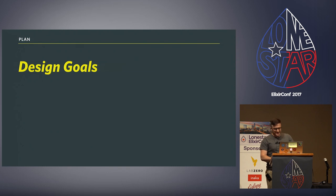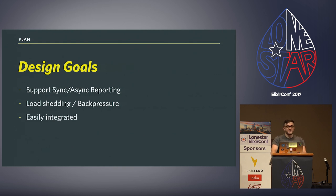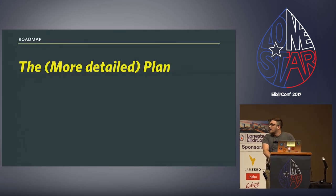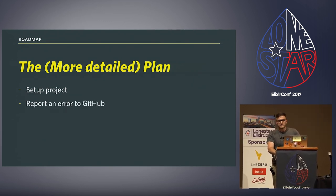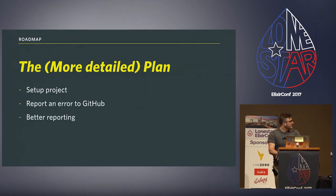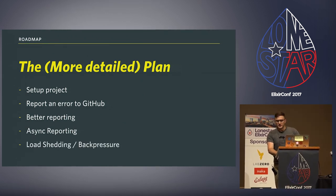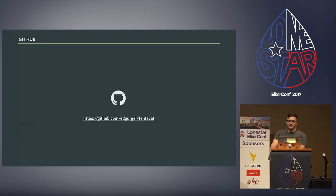The design goals: we want to support synchronous and asynchronous reporting. We want some sort of load shedding back-pressure management so we don't completely destroy the application. We want it to be easily integrated into a Phoenix application, and we also want it to be well-tested. The plan: set up the project, set up error reporting to GitHub, tweak it, add async reporting, and implement load shedding. The only external dependency is Tentacat, a wrapper for the GitHub API.